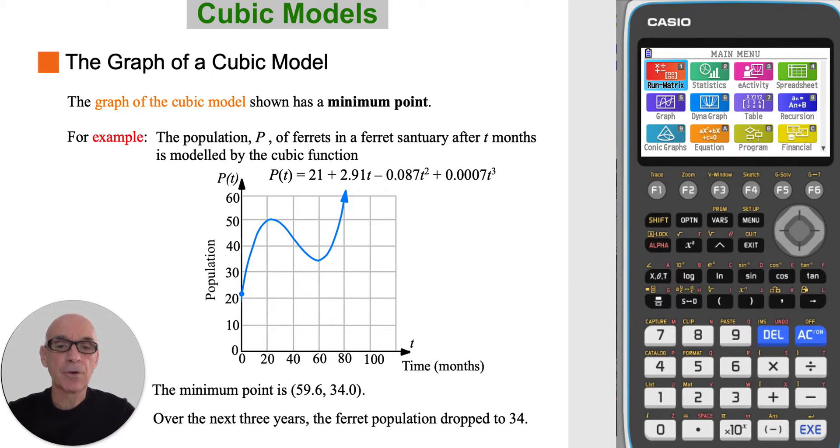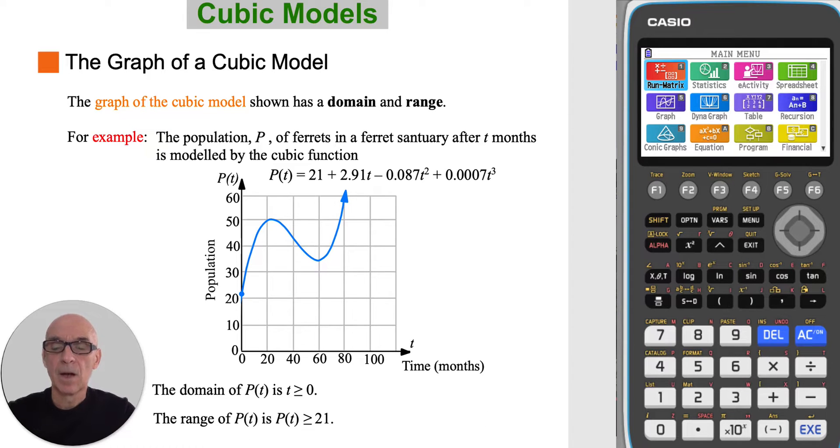The graph also has a minimum point, showing that over the next three years, the ferret population dropped to 34. After that, the graph, and hence the ferret population, continues to rise.